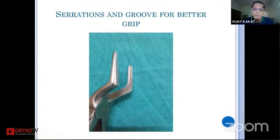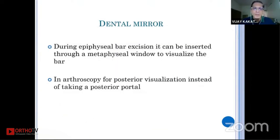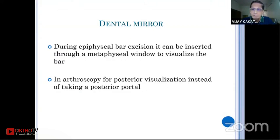Difficult nail extraction can become very easy with this kind of instrument. Similarly, the dental mirror — pediatric orthopods doing excision of the physeal bar can make a small window in the metaphyseal region, pass this dental mirror inside, and use a burr under the control of this mirror to excise the bar. Similarly, German arthroscopy surgeons use a similar kind of mirror from a posterior portal, and by putting a scope from the anterior side they can visualize the posterior side of the tibia very well while doing PCL and other surgeries.